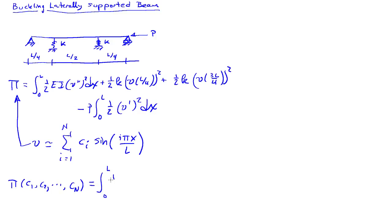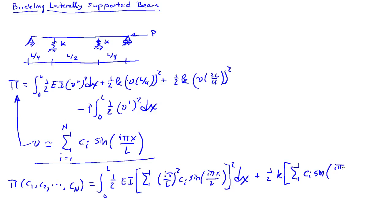Integral zero to L, one-half EI. Now we have to plug in two derivatives of my approximation. If I take two derivatives, I'm going to end up with an I pi over L squared CI times the sine of I pi x over L quantity squared dx. There's a minus sign that appears, but due to the square, it drops out. Then we have a term from the first spring, one-half K, sum over I of CI sine I pi over 4.